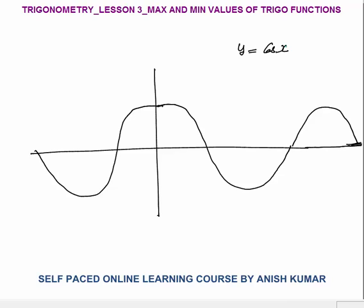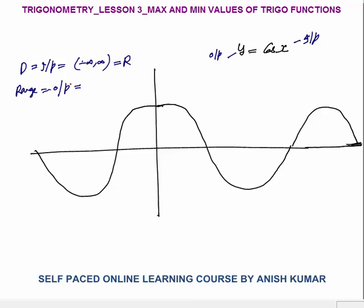Next I will discuss y = cos x. Here x is the input and y is the output. The domain — the set of input values — is again ℝ, from minus infinity to infinity. cos is defined for each and every value of x. The range of y = cos x is again [−1, 1]. Both sin x and cos x lie between −1 and 1. The minimum value of cos x is −1 and the maximum is +1.